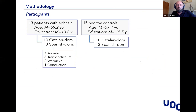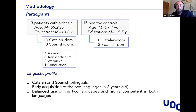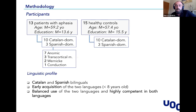We recruited 13 patients with aphasia and 15 healthy controls with the same age, education, and similar distribution for language dominance. In the patient group, we had a variety of aphasia types, but the crucial point is that all patients had anomic deficits as measured by the Western Aphasia Battery. All participants were Catalan-Spanish bilinguals with early acquisition of the two languages, balanced use of both languages, and high vocabulary competence in Spanish. We defined this specific type of bilingualism to exclude those people who were unbalanced or late bilinguals, just to exclude any effect of linguistic variables in determining language impairment and naming performance.